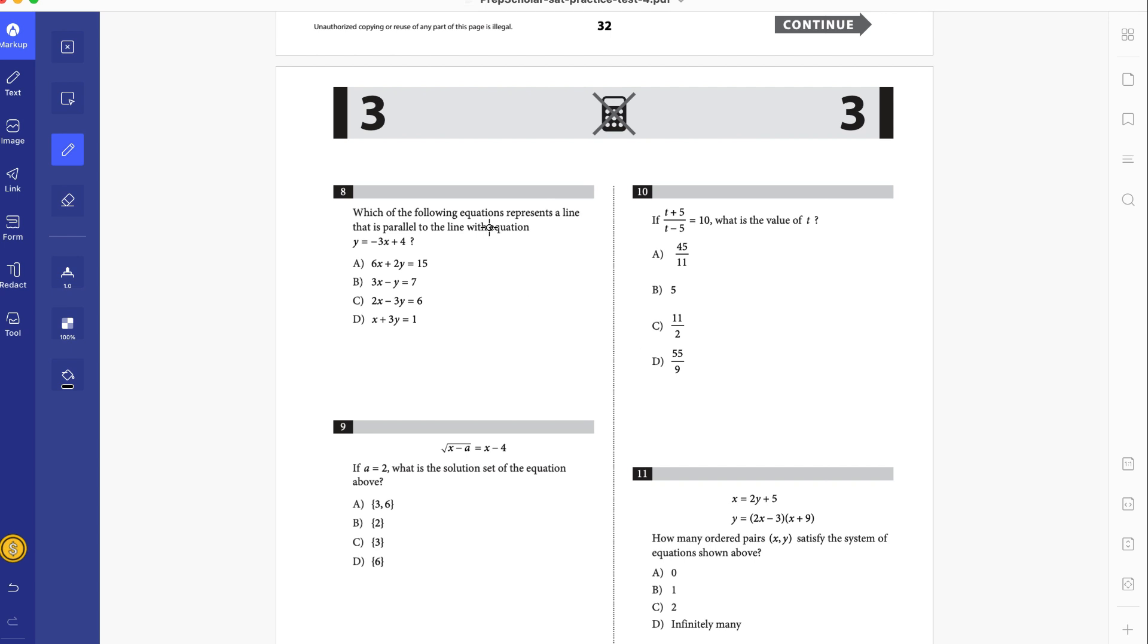So 8, which of the following equations represents a line that is parallel to the line of the equation y equals negative 3x plus 4? I'm going to add a quick piece of information. Parallel lines. And this is what you should do on your practice test, include important notes. Same slope, different y-intercept.